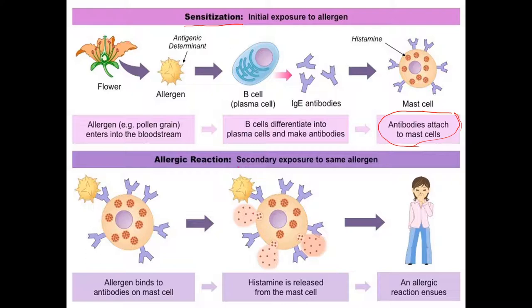Now, with any future secondary exposures, you have an allergic response. The allergen binds to the antibody attached to the mast cell — that acts like a key, opening the mast cell to release histamine. Histamine causes two main things we learned about with inflammation: dilation of blood vessels so they get wider, and increased leakiness. That's where you get all the symptoms associated with allergic responses.